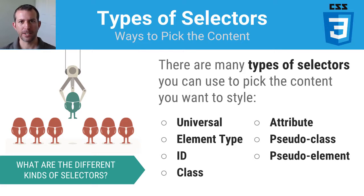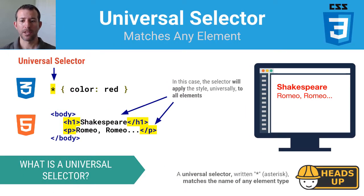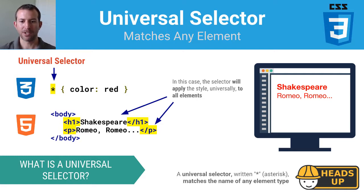Pseudo is sort of a fancy way of saying fake or foe. The universal selector is written using the asterisk. As you can see here, there's one style rule written on the page that seeks to color all text red. By using the universal selector, it matches all of the elements on the page, so both the H1 and the P have their text colored red. It matches the name of any element type.